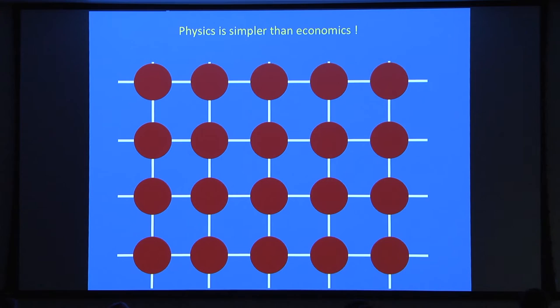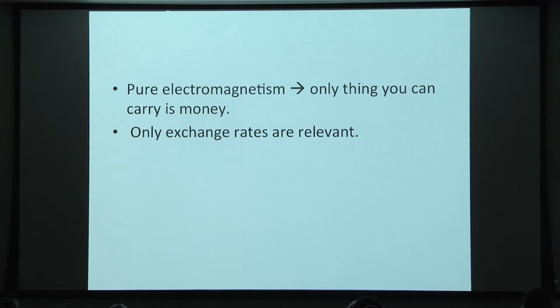These are all things that make the economic model different from the real economy, and this is one of the reasons why physics is simpler than economics. Another reason, which I won't discuss in detail, is that we are normally taking the continuum limit where all this is happening at very short distances.